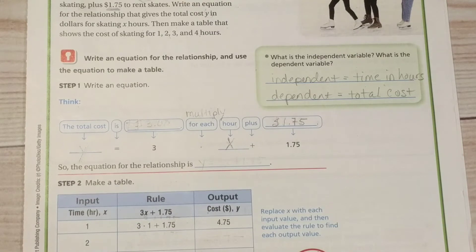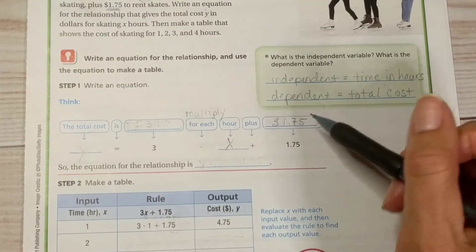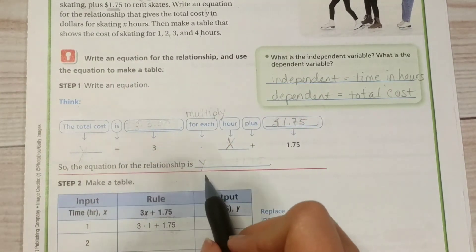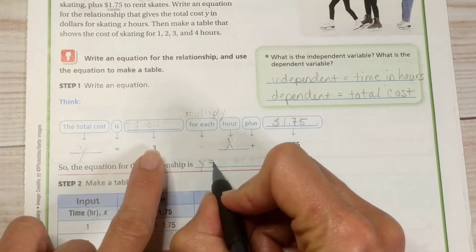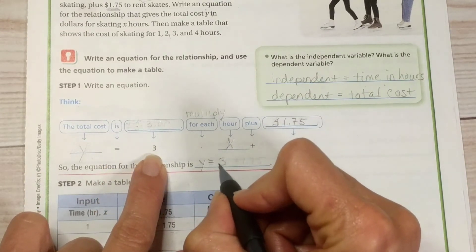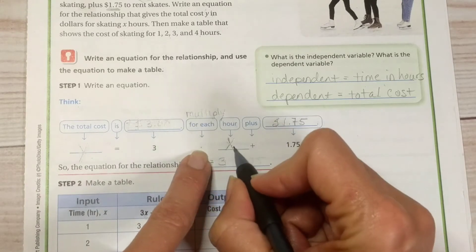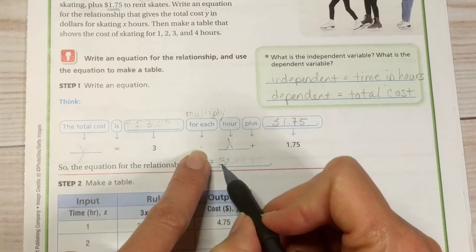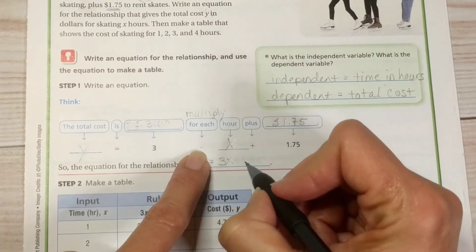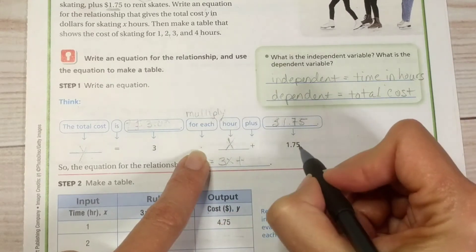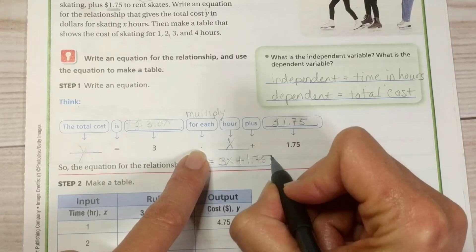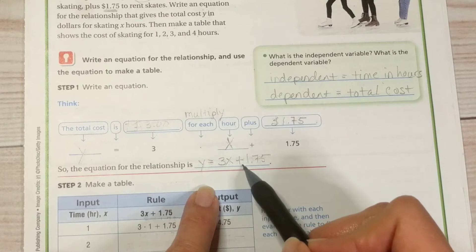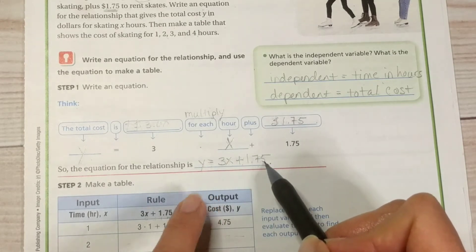And our $1.75 skate rental is a fixed cost. It doesn't change. So the equation for the relationship is y equals 3 times x. And we write that as 3x. If a variable is next to the coefficient, that means it's multiplied plus $1.75 for our skate rental. So this is our equation. y equals 3x plus 1.75.